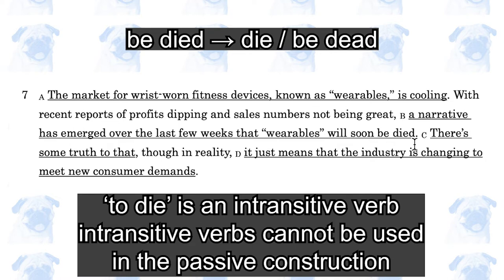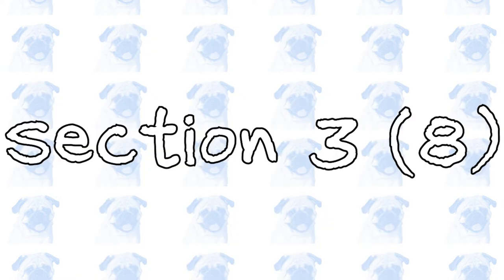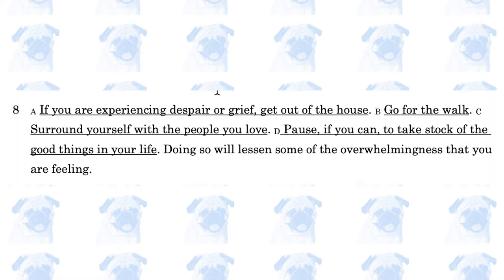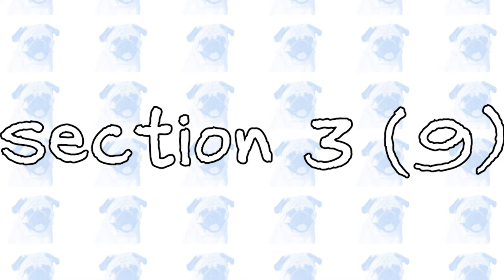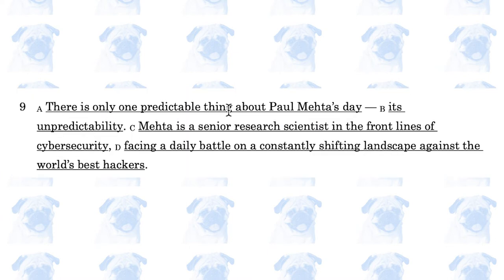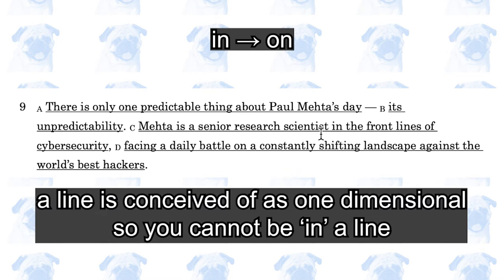For example, you cannot say 'I was arrived.' If you are experiencing despair or grief, get out of the house. Go for the walk — it should be 'go for a walk,' because that's the phrase we use. There is only one predictable thing about Paul Meta's day: its unpredictability. Meta is a senior research scientist in the front lines of cyber security — it should be 'on the front lines,' not 'in the front lines,' because lines are one-dimensional and you can be on a line, not in a line.